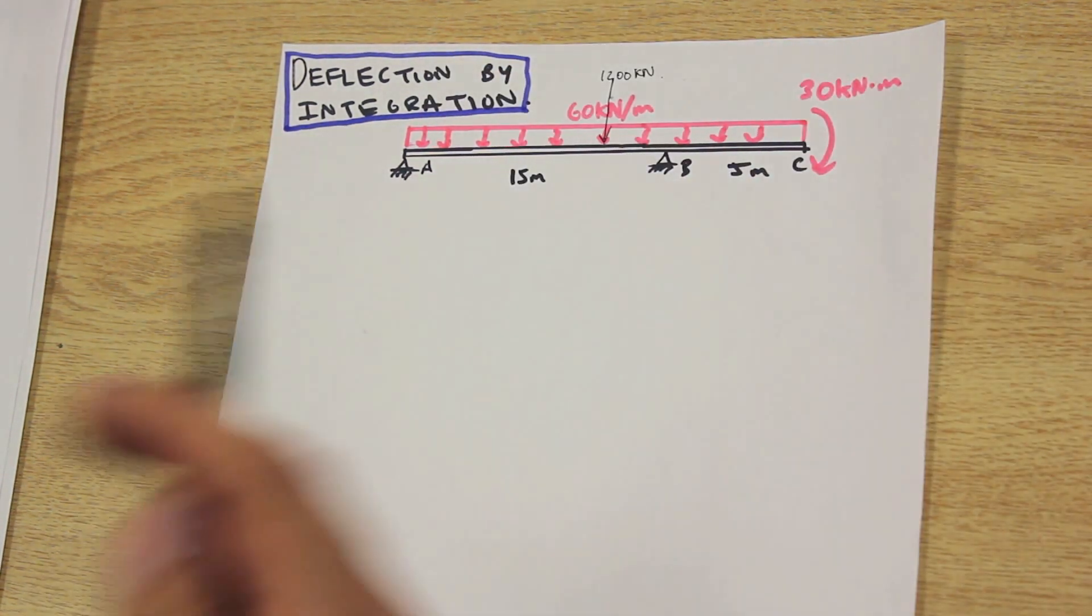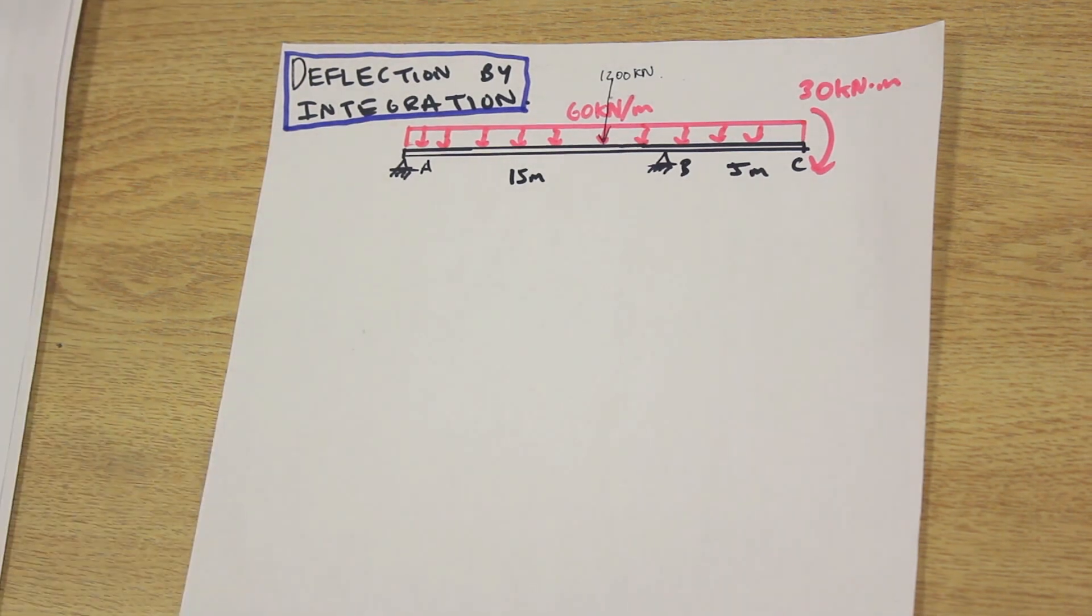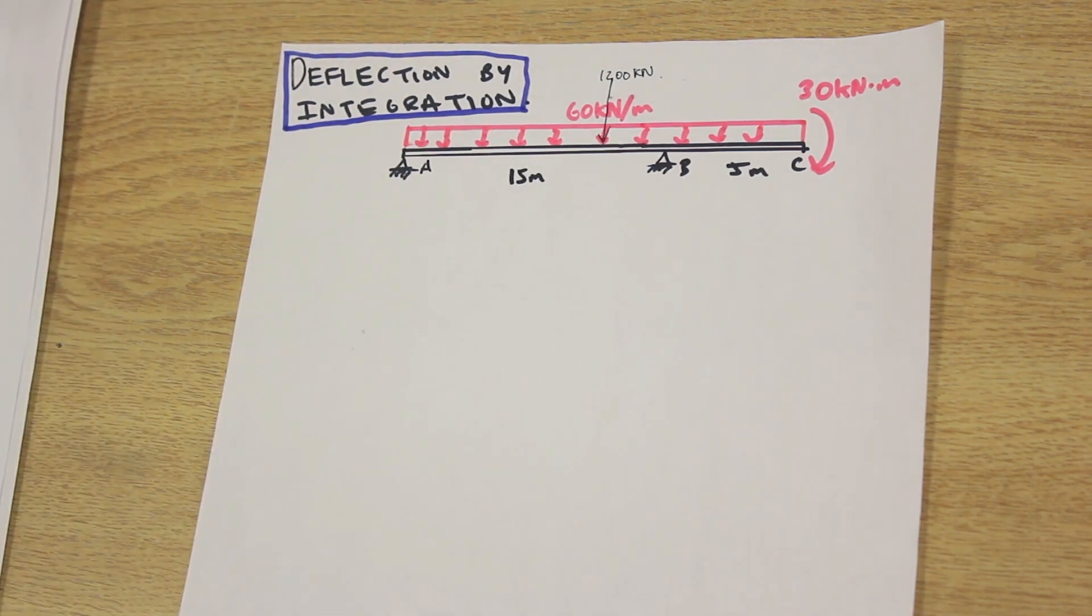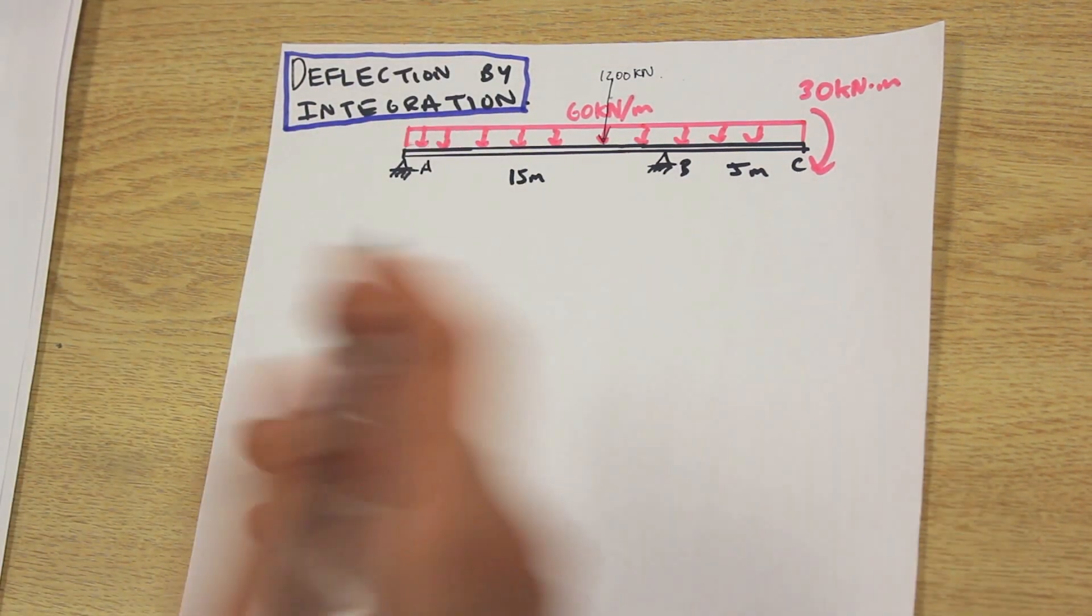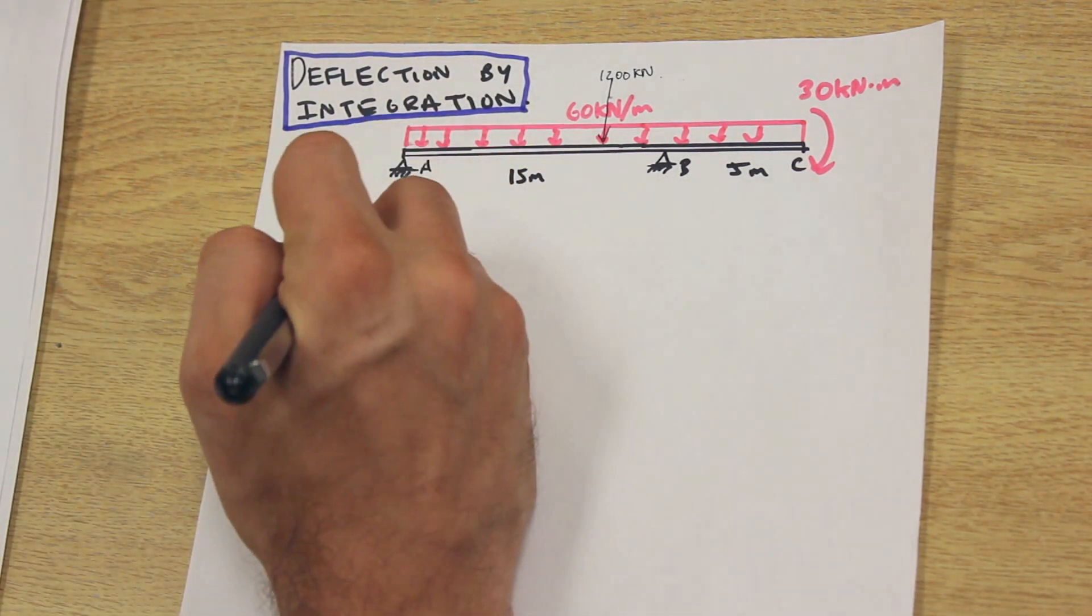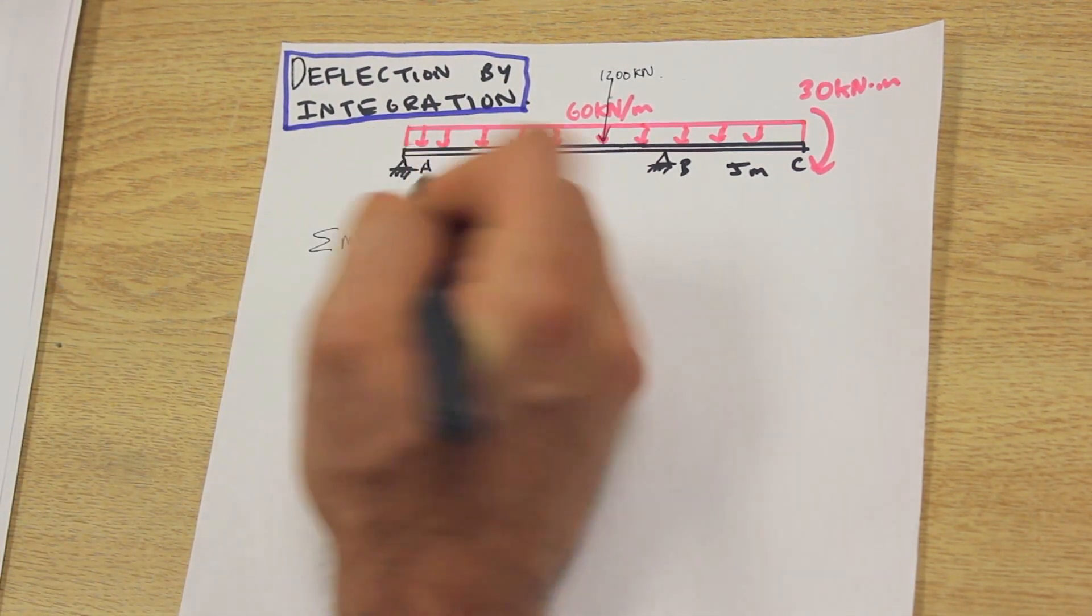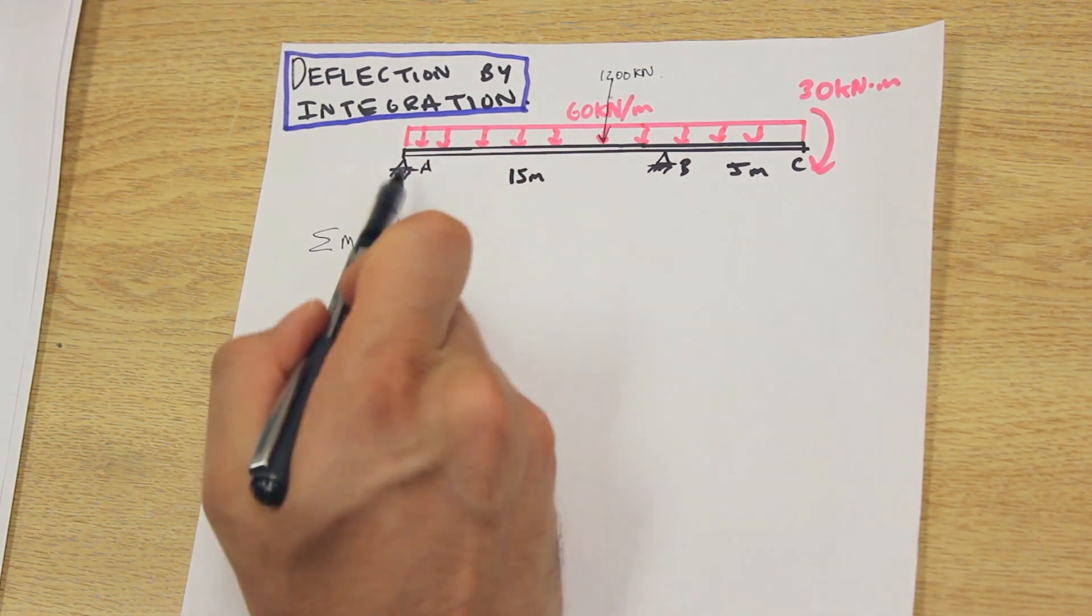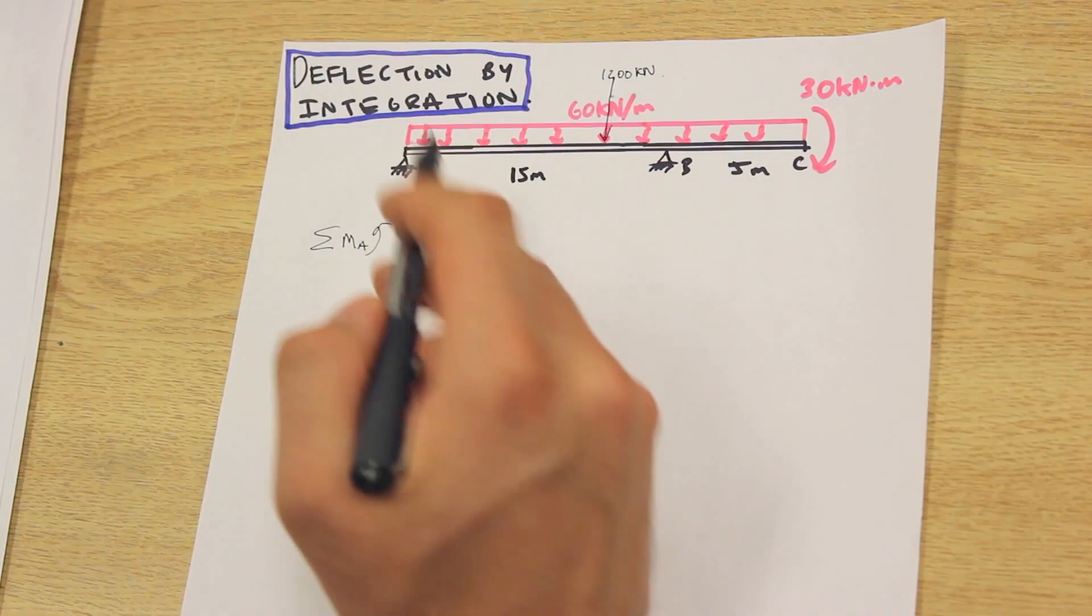We'll go through it step by step. The first step is finding the reactions. I'm going to do it nice and quick just because we've already done this before. Let's take the moment about A, and we're going to take counterclockwise as our positive direction.